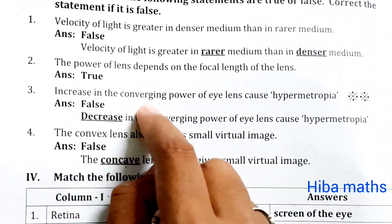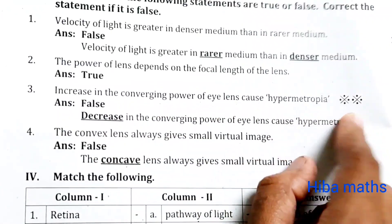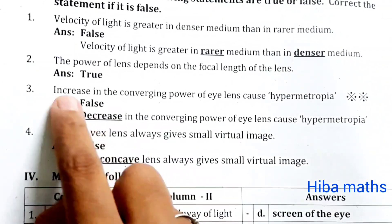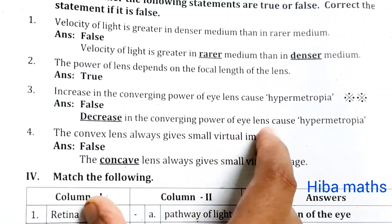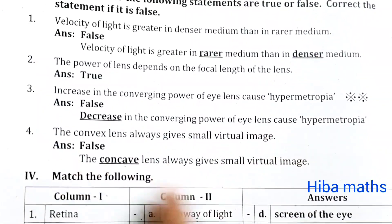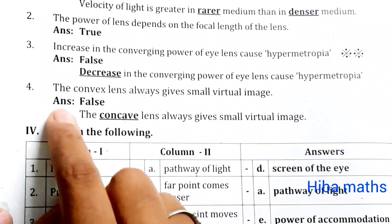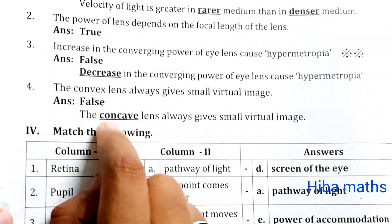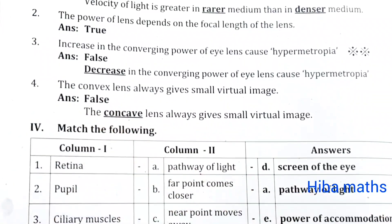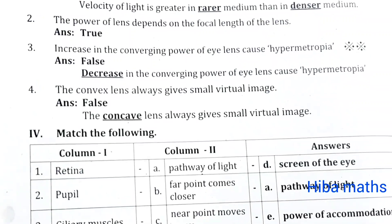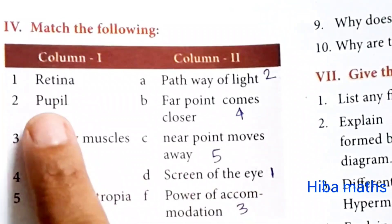Third question: increase in the converging power of eye lens causes hypermetropia. Fourth question: the convex lens always gives a small virtual image. Answer: false.